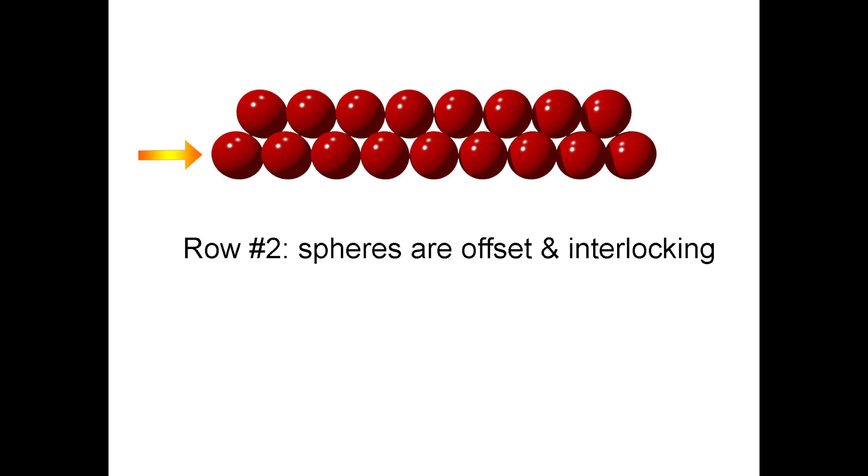We can pack more spheres into a smaller amount of space. This is close packing of two rows. Notice that the empty space left between the rows is significantly smaller. These are now triangular shaped holes.